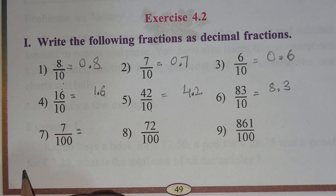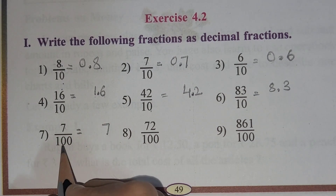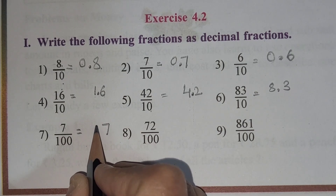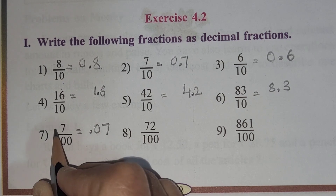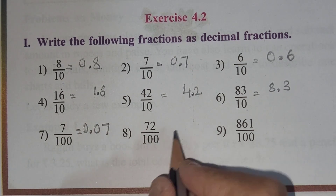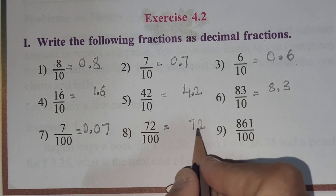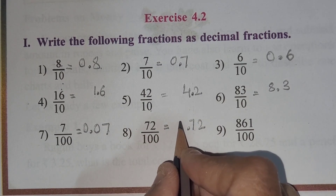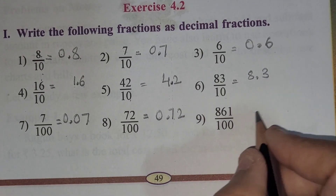Now 7 by 100: write numerator 7 as it is. In 100 there are two zeros, but we only have one digit, so write 0 then place the decimal point after two digits — no number before, so put 0. The answer is 0.07. Next, 72 by 100: two zeros in the denominator, after two digits — no leading number, so write 0 — the answer is 0.72.